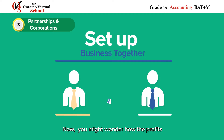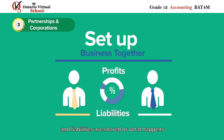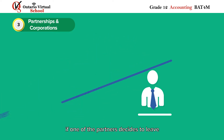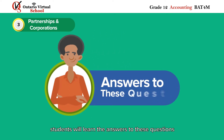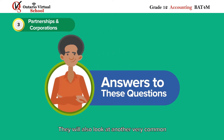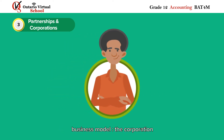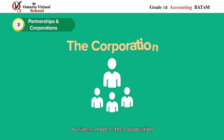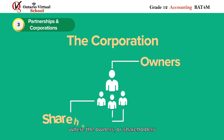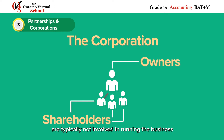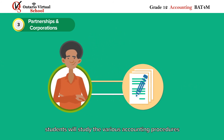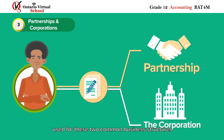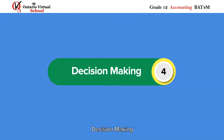You might wonder how the profits and liabilities are shared, or what happens if one of the partners decides to leave. In this unit, students will learn the answers to these questions. They will also look at another very common business model — the corporation — where the owners or shareholders are typically not involved in running the business. Throughout this unit, students will study the various accounting procedures used for these two common business structures.